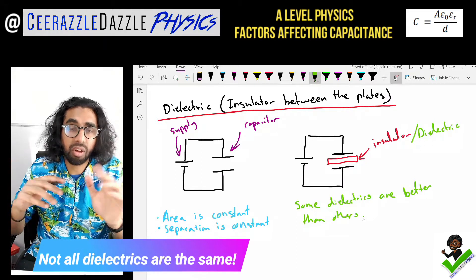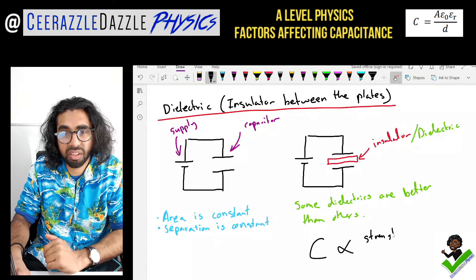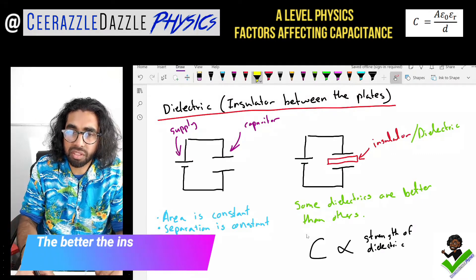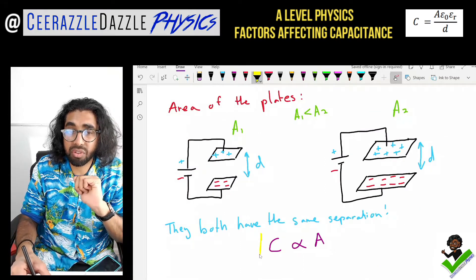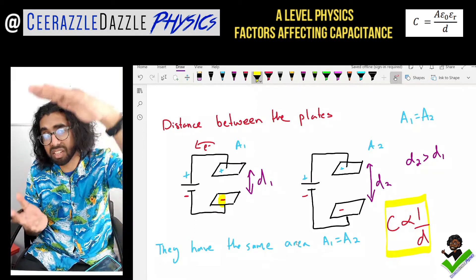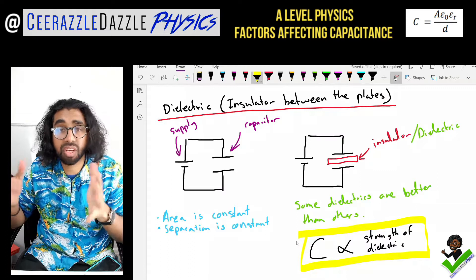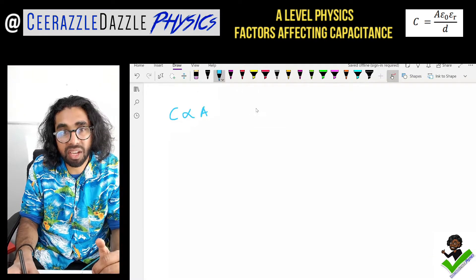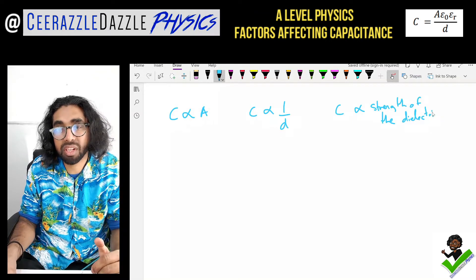Some dielectrics are better than others — there's a range within them. So we can say the capacitance is proportional to the strength of the dielectric. Combining all three: capacitance is proportional to area; capacitance is inversely proportional to the distance between the plates; and capacitance is proportional to the strength of the dielectric. We know C is proportional to A, C is inversely proportional to d, and C is proportional to the dielectric strength.